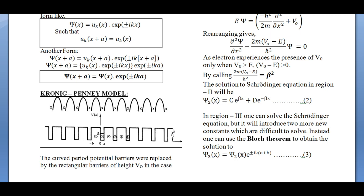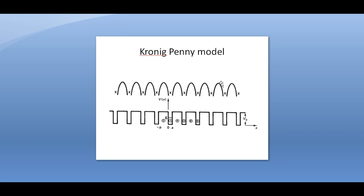These rectangular barriers have an assumed height V₀. The same picture is shown here: the barriers have x = 0 at this location — an arbitrary point. Region 1 extends from x = 0 to x = a. Region 2 is on the left, a barrier of height V₀ and width b; in coordinate convention, it is −b since it is on the left side of the origin, while on the right-hand side we take all positives. Width of this barrier is b and height is V₀.